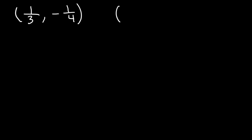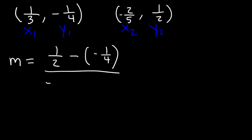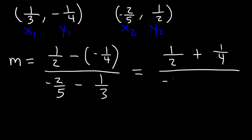Now for practice, let's try another similar example. Let's say we have the point 1/3, negative 1/4, and another point negative 2/5, positive 1/2. Pause the video and calculate the slope between these two points. So first, let's identify the points. m is going to be y2, which is 1/2, minus y1, which is negative 1/4, divided by x2, which is negative 2/5, minus x1, which is 1/3. 1/2 minus negative 1/4 is the same as 1/2 plus 1/4. Now let's simplify the complex fraction.